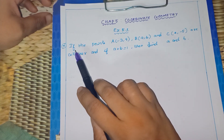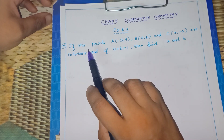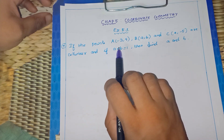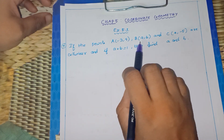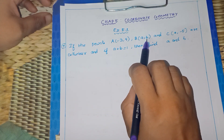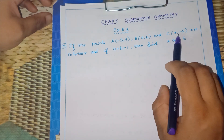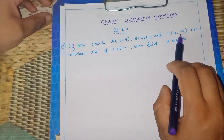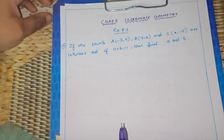This is the 7th sum. The question is: if the points A(-3, 9), B(A, B), and C(4, -5) are collinear.